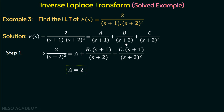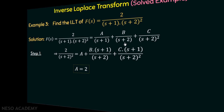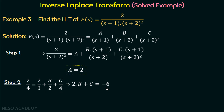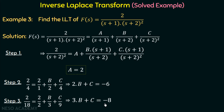So we cannot find out the values of B or C by substituting s equal to minus two. We need to try different values of s to find B and C. If we take s equal to zero, then we have 2 over 4 equal to 2 over 1 plus B over 2 plus C over 4. We have already substituted the value of A, and solving this equation gives us 2B plus C equal to minus six. Similarly, substituting s equal to one gives us 2 over 18 equal to 2 over 2 plus B over 3 plus C over 9, and solving gives 3B plus C equal to minus eight.